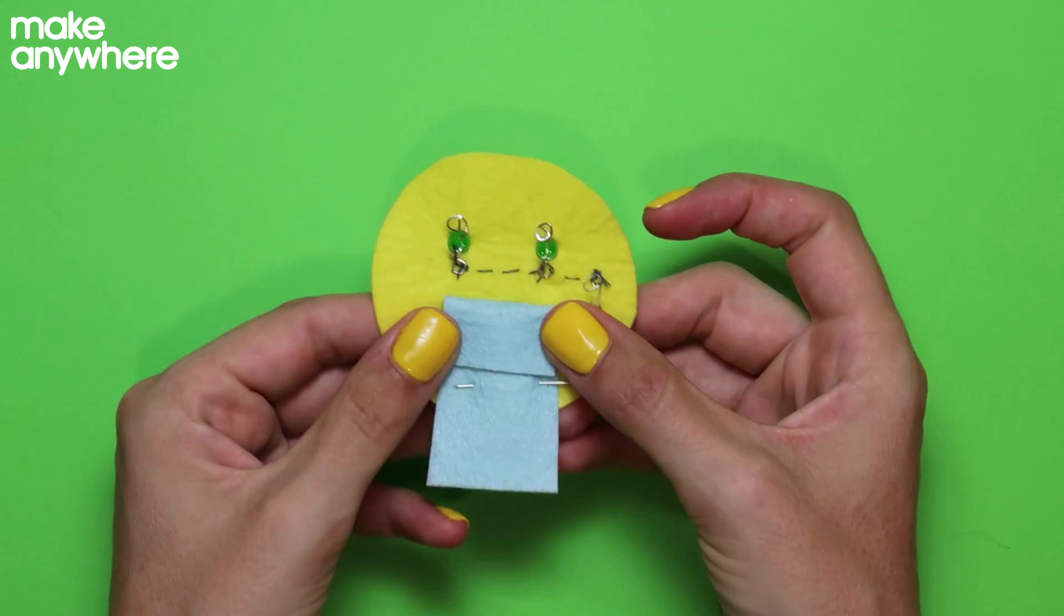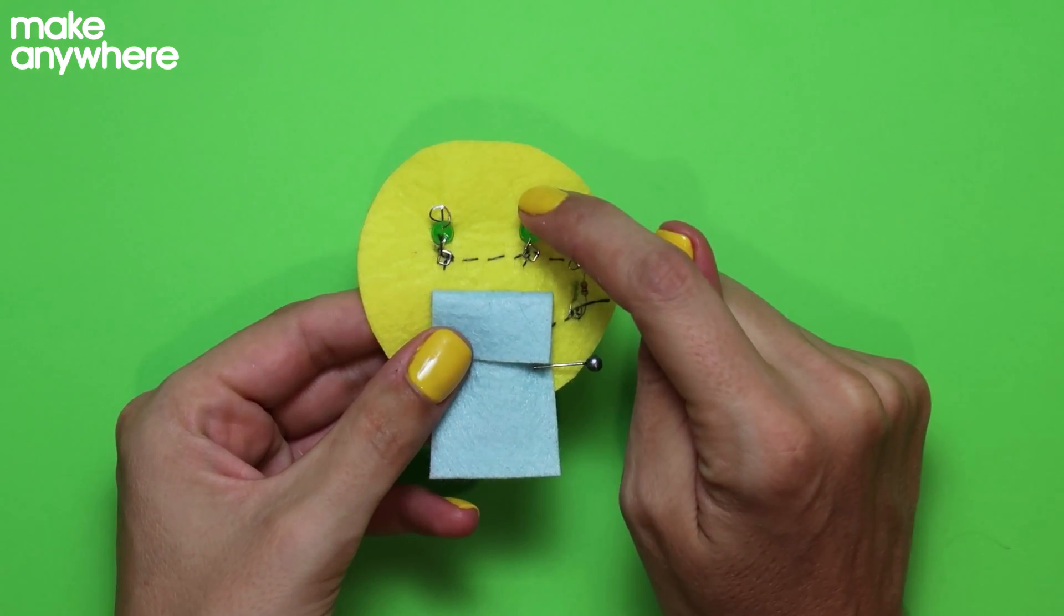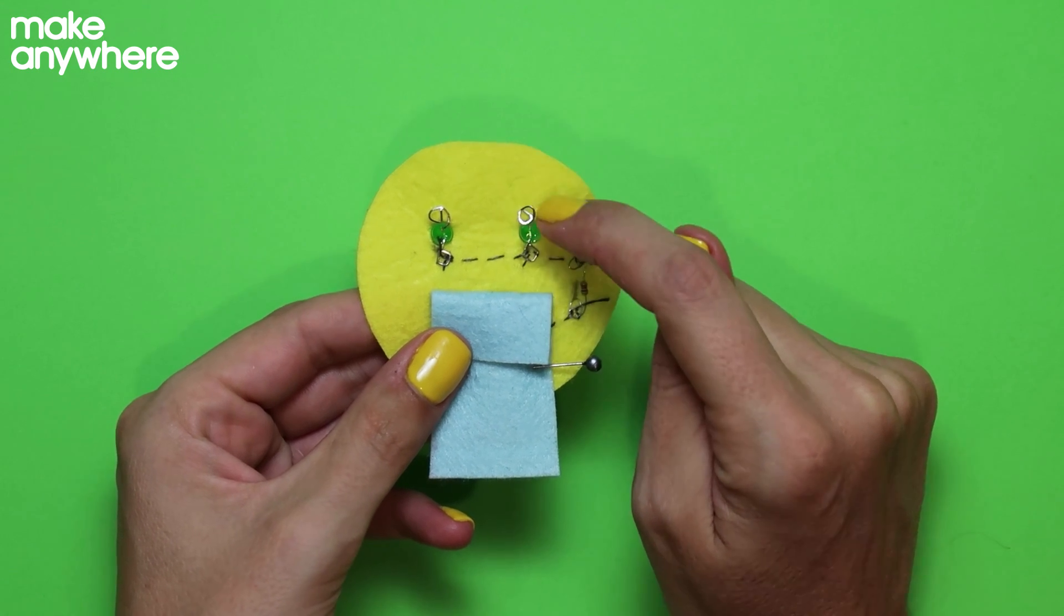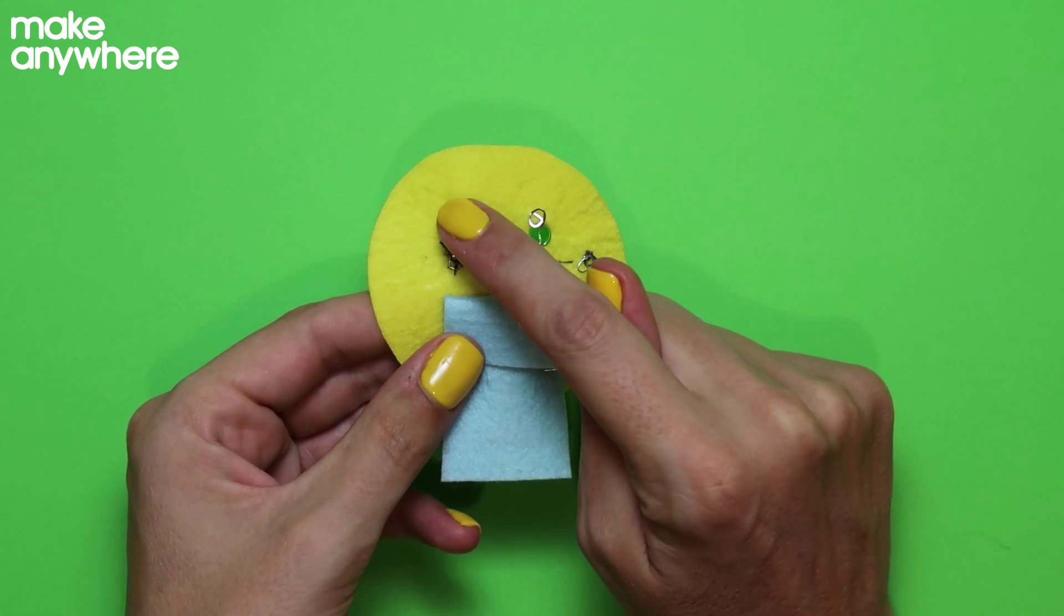Now we need to connect the positive side up. We're going to start on this LED, go down, up and around and do that three times. Then over to this one.